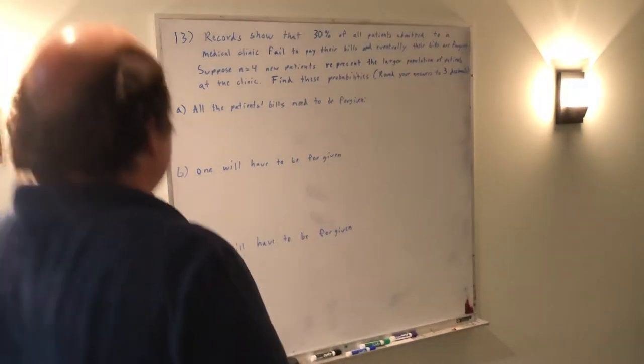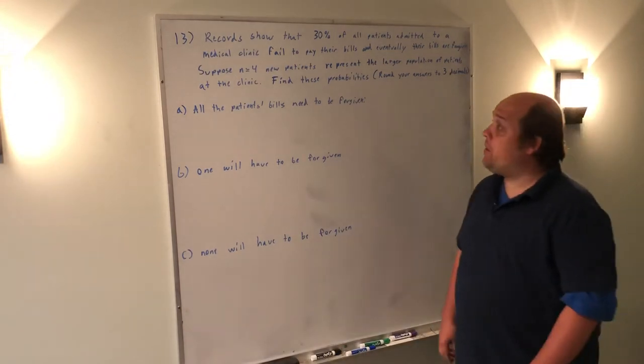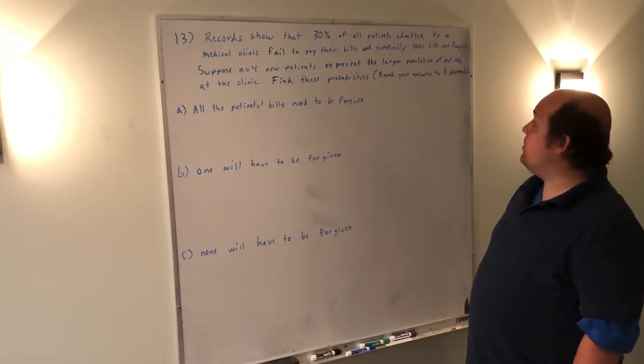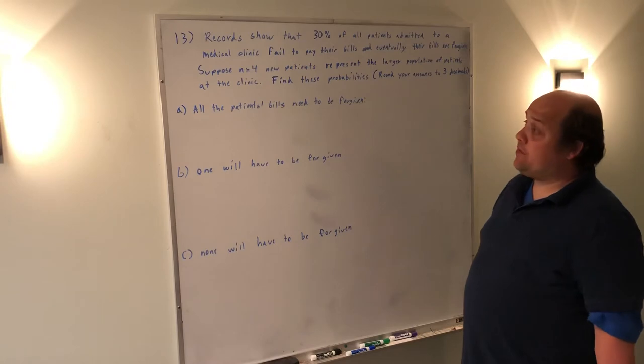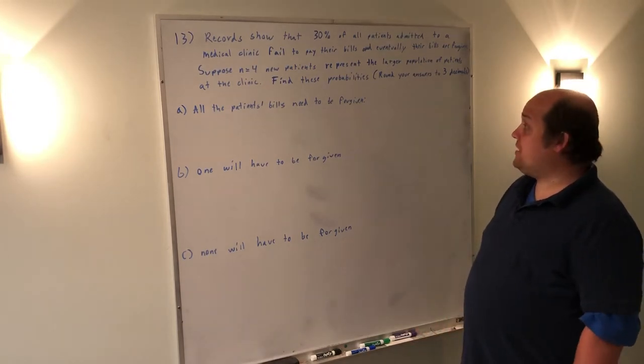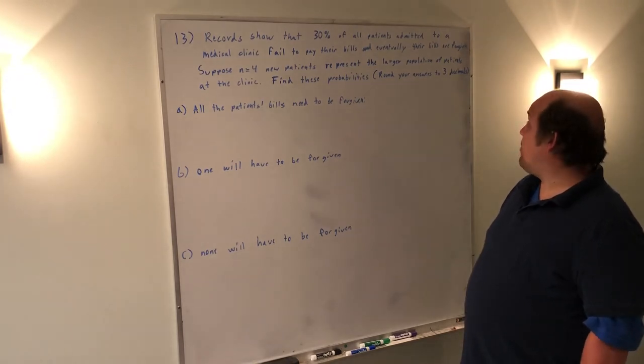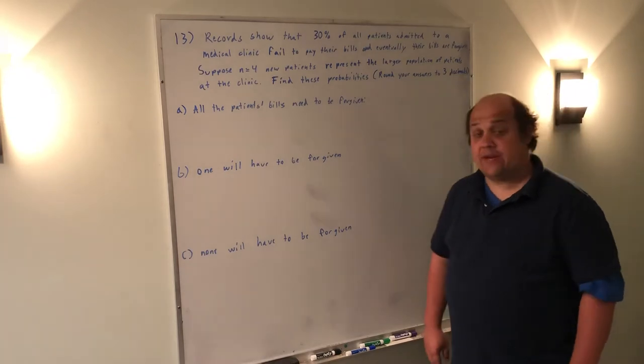In the scenario in question 13, records show that 30% of all patients admitted to a medical clinic fail to pay their bills, and eventually the bills have to be forgiven. Suppose we're looking at N equals 4 new patients as a sample to represent the larger population of patients at the clinic. Find these probabilities, round your answer to 3 decimals.